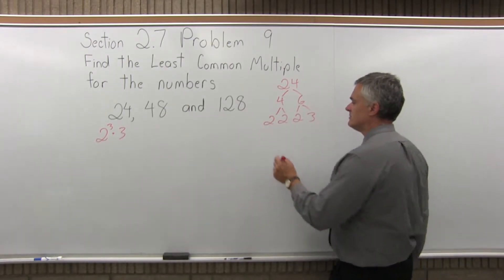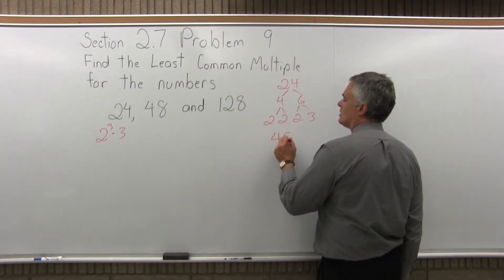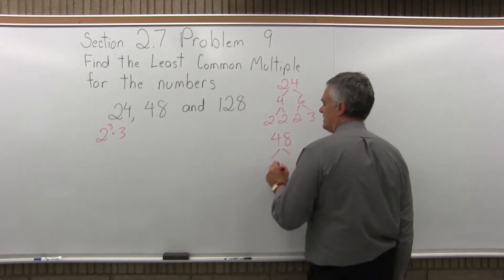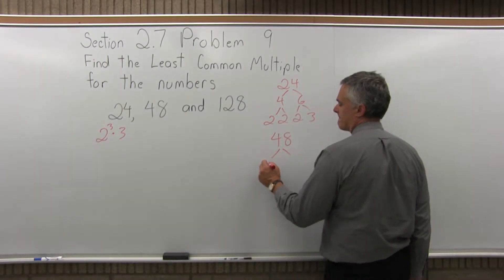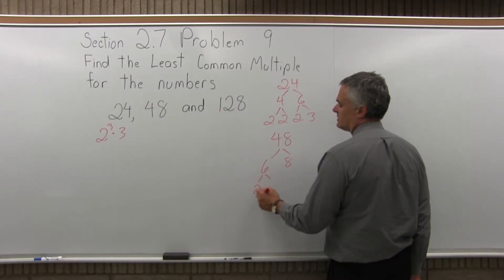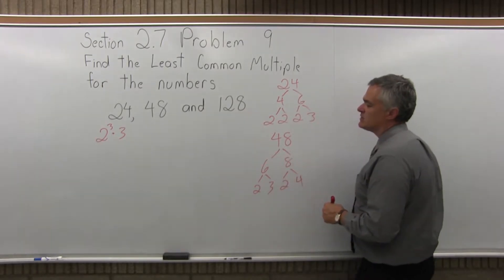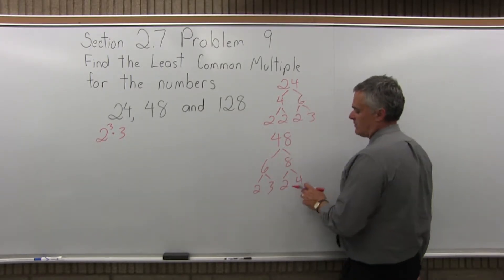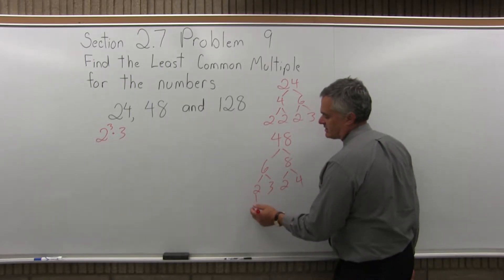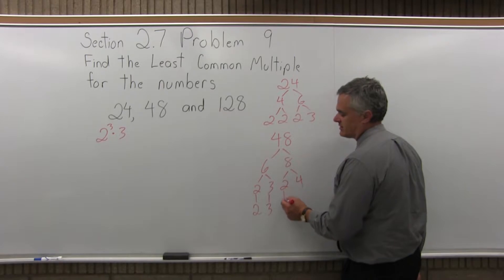Next, do 48. 48 would be 6 times 8. The 6 splits into 2 times 3. The 8 splits into 2 times 4. The 4 is not done, but the other numbers are. So 2 comes straight down without splitting. 3 comes straight down without splitting. I have a 2 again, comes straight down without splitting. And then the 4 can split 2 times 2.